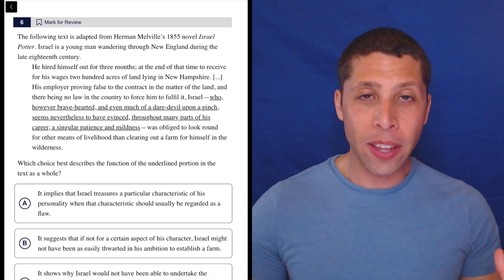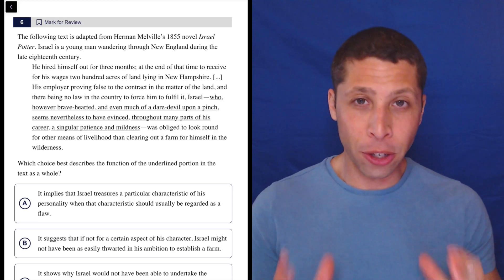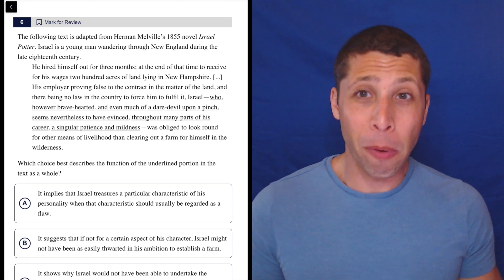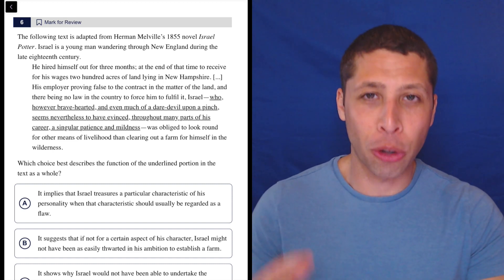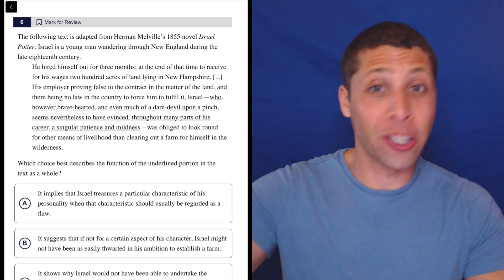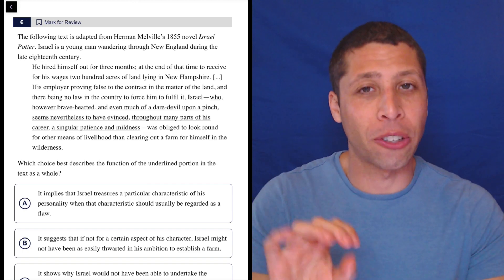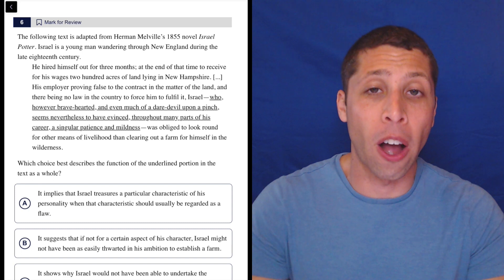For these questions that have an underlined thing that we need to find the function of, remember you're focused on that underlined part, but we still should be reading what goes on around it. But remember that also might mean some of the trap answers are going to be about other sentences. So we do want to make sure at the end of it we're really focused on the underlined portion.